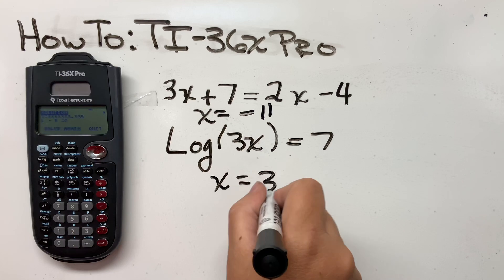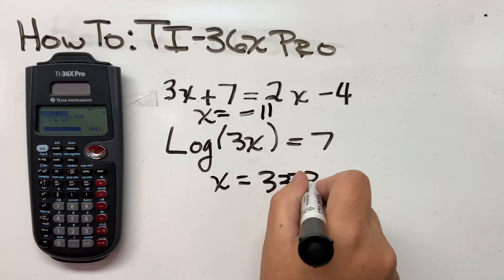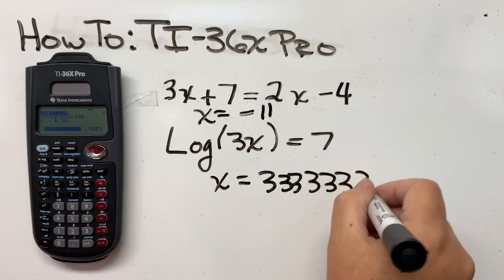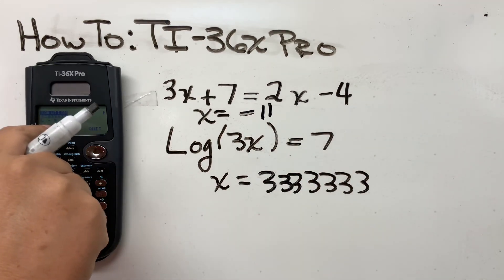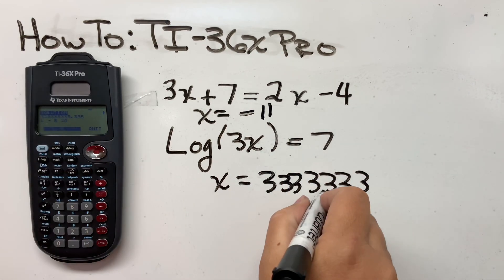And it says X is 333,333. Oh, one more three. Right? One, two, three, four, five. Yeah, seven. Three, six, seven.